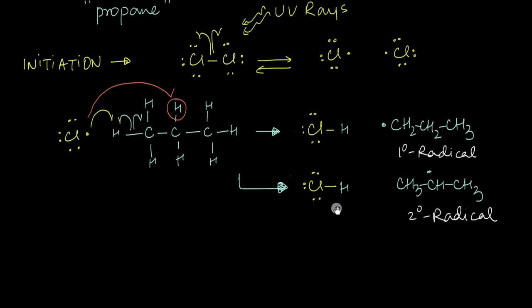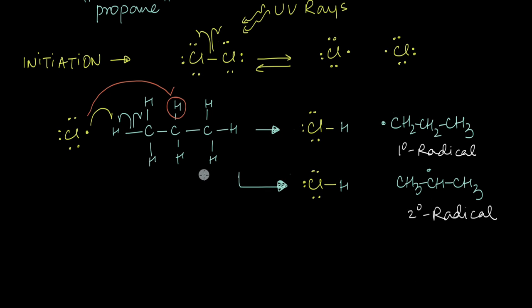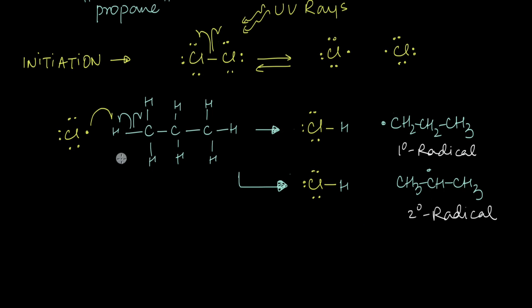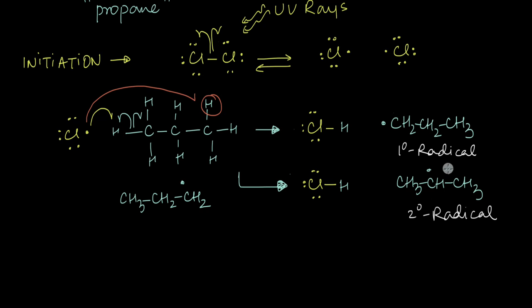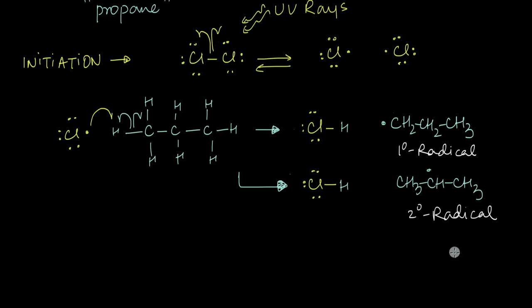So depending on which hydrogen the chlorine radical abstracts from propane, we get different carbon radicals. Abstracting any hydrogen from either end gives a first-degree carbon radical, CH₃CH₂•CH₂, while abstracting any hydrogen from the central carbon gives a second-degree radical, CH₃•CHCH₃. In all cases, only a first-degree or a second-degree carbon radical is formed.